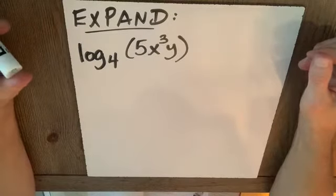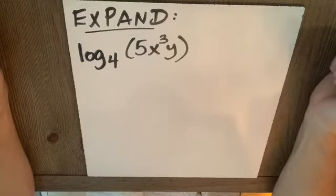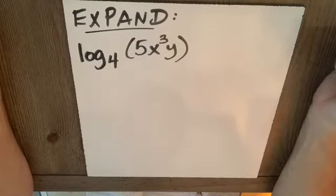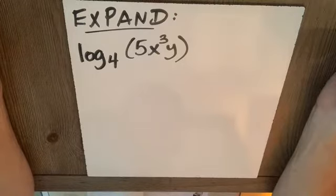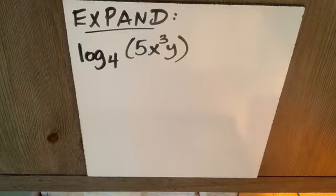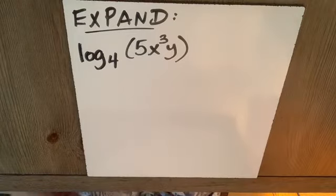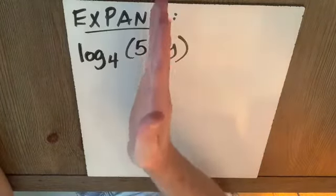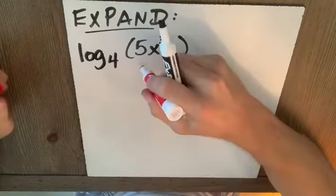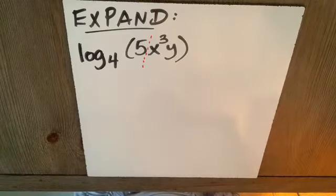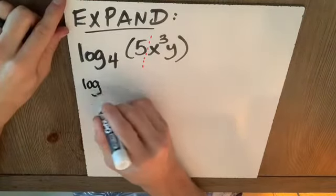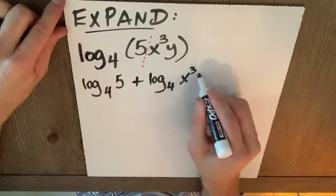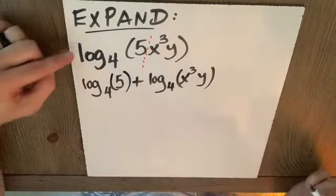Rewriting logarithmic expressions. The properties of logarithms are useful for rewriting logarithmic expressions in forms that simplify the operations of algebra. This is true because they convert complicated product quotients and exponential forms into simpler sums, differences, and products, respectively. So, let's get some practice doing this. Let's expand log 4 of the argument 5x cubed y. Well, I can split this right here, if I want to, and say, well, this is 5 times x cubed y. So, this would be log base 4 of 5 plus log base 4 of x cubed y. I've taken one log and I've expanded it to logs.